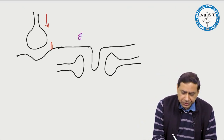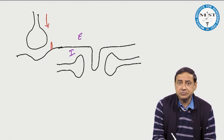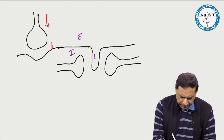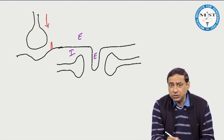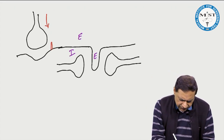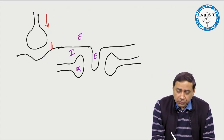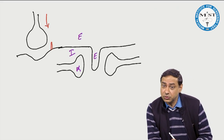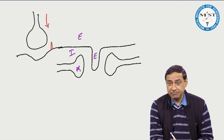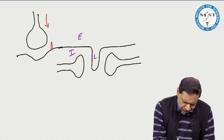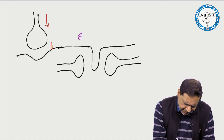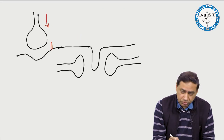Here we have extracellular fluid, and here we have intracellular fluid inside the cell. The T-tubule is an extension of the extracellular fluid. Inside the sarcoplasmic reticulum, there is a lot of calcium. This entire assembly is known as the triad.